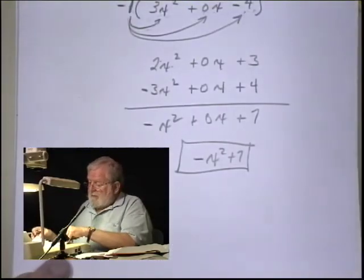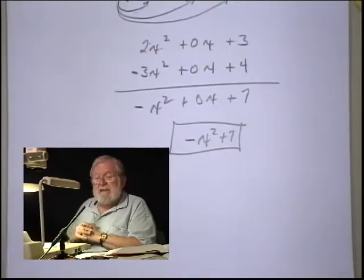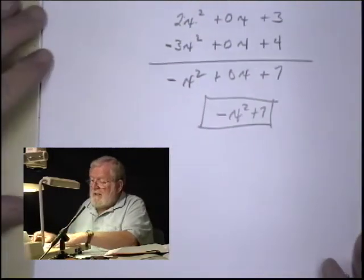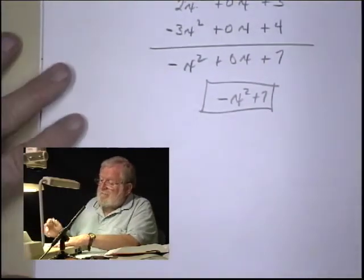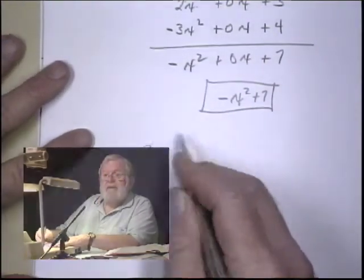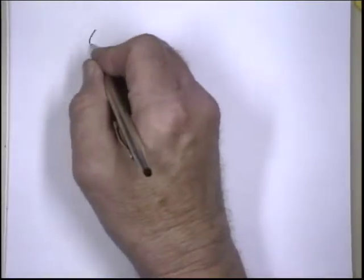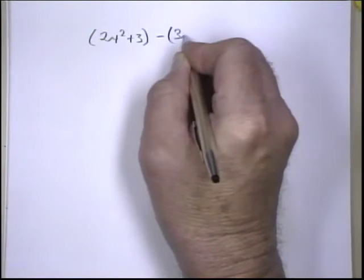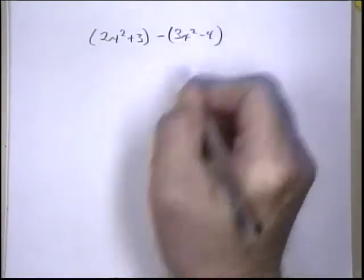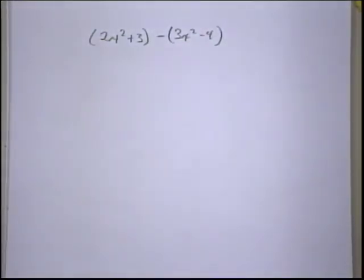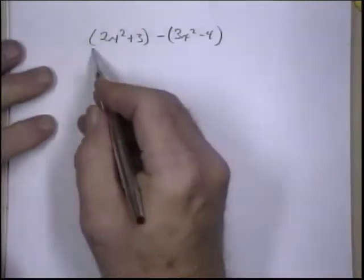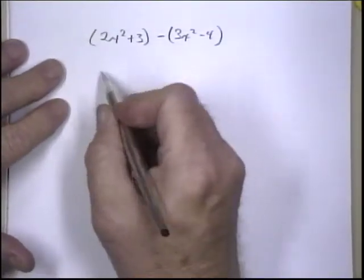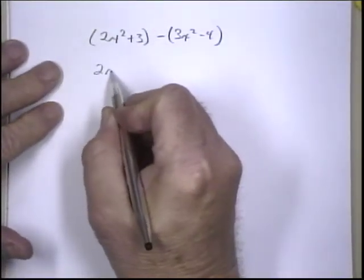Let's do this same problem horizontally. We're going to do (2x² + 3) minus (3x² - 4). So we have a plus here, so we can just remove these parentheses.